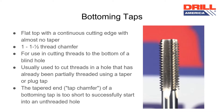Bottoming taps are for use in cutting threads to the bottom of a blind hole. They are usually used to cut threads in a hole that has already been partially threaded using a taper or plug tap. The tapered end tap chamfer of a bottoming tap is too short to successfully start into an unthreaded hole.